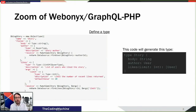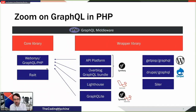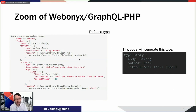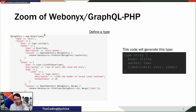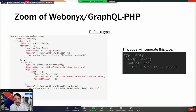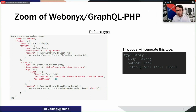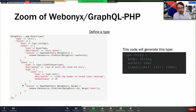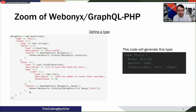Let's zoom on WebOnyx. It is a core library. With WebOnyx you define a GraphQL type — for example a 'story' type — and declare its fields with their types, descriptions, and arguments. A resolver is called when that field is queried. If you want to declare a query, you create a type whose name is 'query', because in GraphQL a query is a field on the query type.